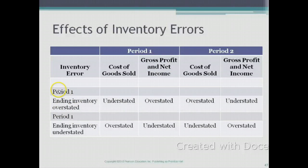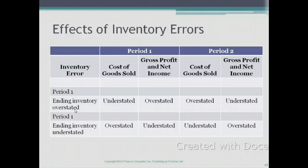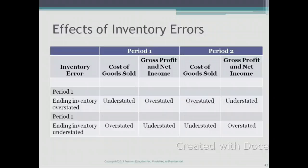Here it says ending inventory is overstated, and then it will tell you what the effect of this is on your cost of goods sold, gross profit, and net income. In period 2, the ending inventory in period 1 becomes the beginning inventory in period 2, so here it will tell you what the effect of a beginning inventory error is on your cost of goods sold, net profit, and gross profit. It basically summarizes all the effects of inventory errors, but I'm going to explain it another way as well. You can use whichever method you like.